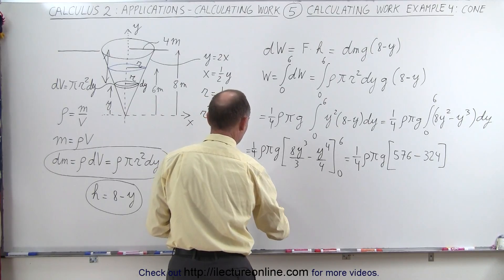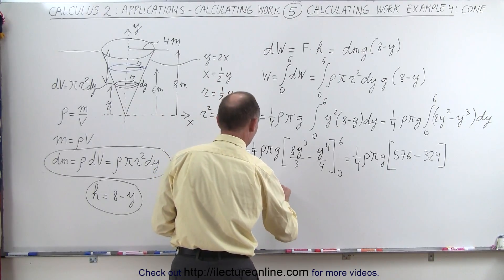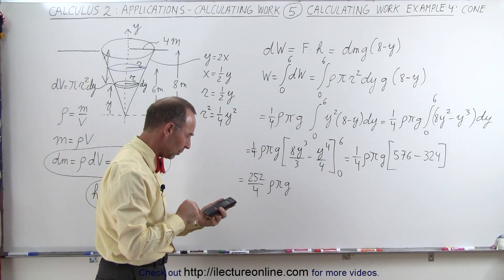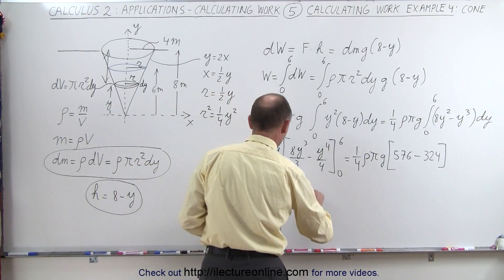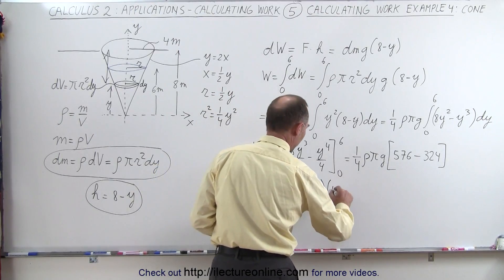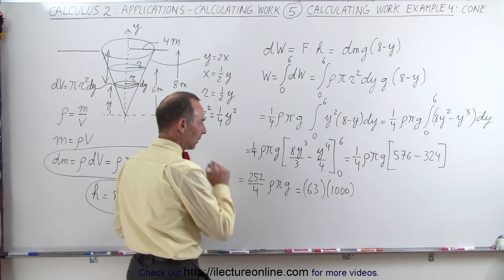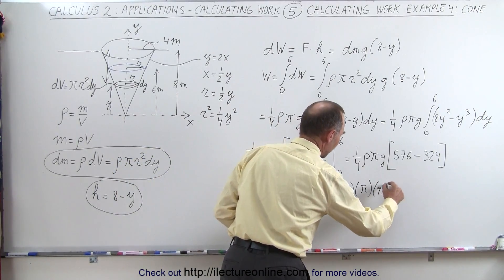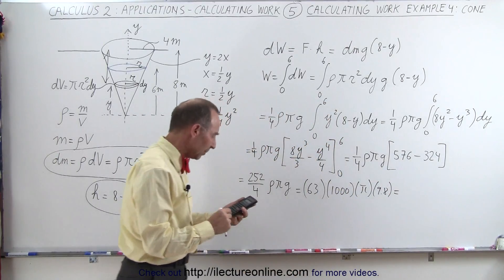So divide that by 4 equals that's 63. So this becomes 63 times the density of water, which is 1,000 kilograms per cubic meter, times pi and times g, which is 9.8. So let's see what that becomes.